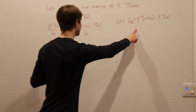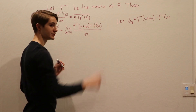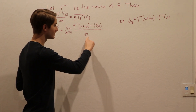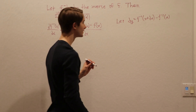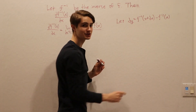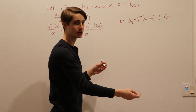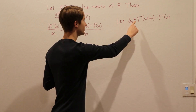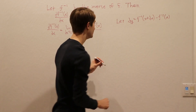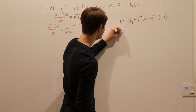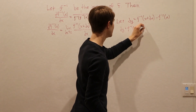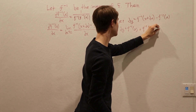We can put dy on the top, but we want to get rid of dx, so let's figure out what dx is in terms of dy. To start off, we want to isolate the f inverse of x plus dx term so that we can apply f on both sides and remove that f inverse. So let's add f inverse of x to both sides: dy plus f inverse of x equals f inverse of x plus dx.